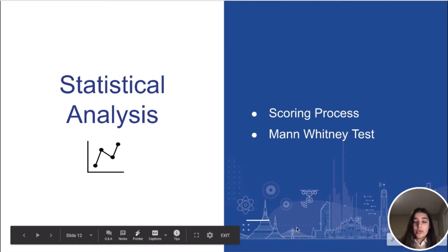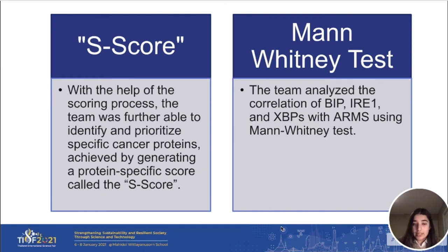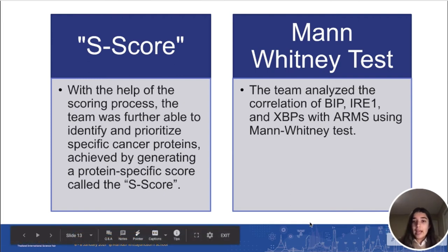For statistical analysis, we used a scoring process and the Mann-Whitney test. With the help of the scoring process, the team was further able to identify and prioritize specific cancer proteins by generating a specific S-score. Blind pathologists blindly scored the results, giving a number that correlates with expression: zero means none, one means weak, two would be moderate, and three is strong. We then analyzed the correlation of these proteins with ARMS using a Mann-Whitney test.